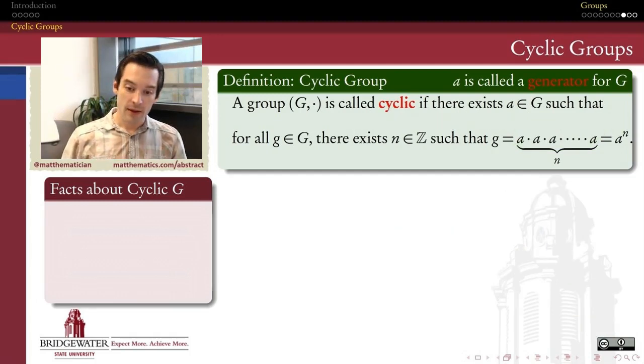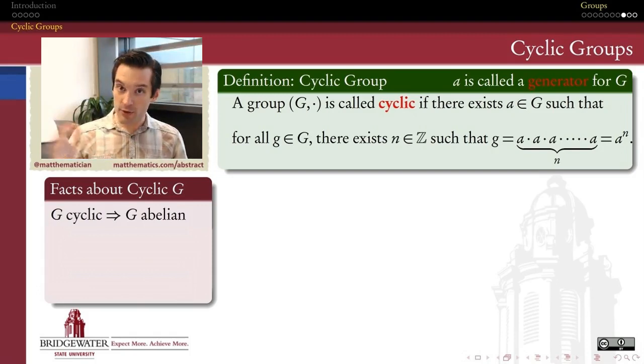The first is that every cyclic group will be abelian. Remember, most groups that we encounter in the wild do not satisfy the commutative property. G operate H and H operate G are, in general, very different from one another. But cyclic groups will never break our heart like that. Every cyclic group satisfies the commutative property.